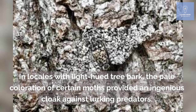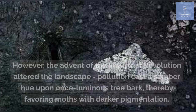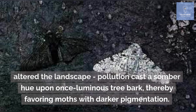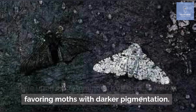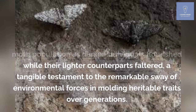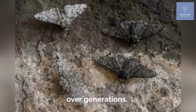In locales with light-hued tree bark, the pale coloration of certain moths provided an ingenious cloak against lurking predators. However, the advent of the Industrial Revolution altered the landscape — pollution cast a somber hue upon once luminous tree bark, thereby favoring moths with darker pigmentation. This transition initiated a dramatic shift within the moth population as darker individuals flourished while their lighter counterparts faltered — a tangible testament to the remarkable sway of environmental forces in molding heritable traits over generations.